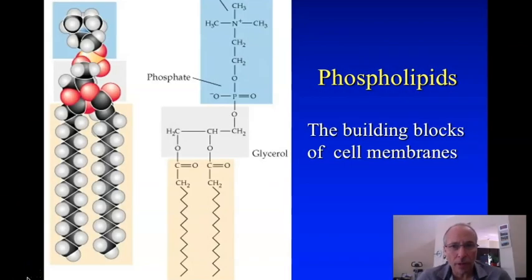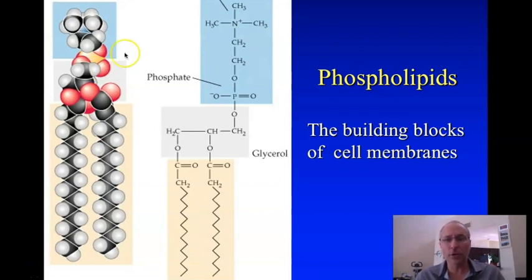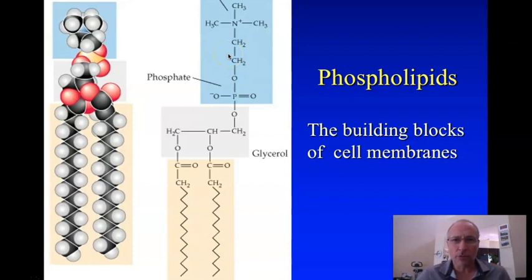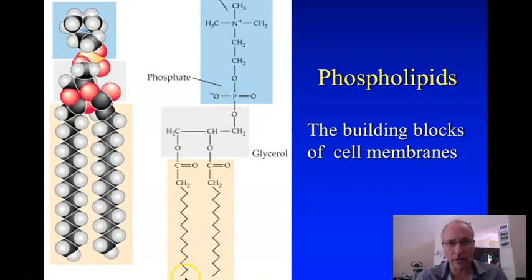What is the cell membrane made out of? It's made out of these kinds of molecules right here. This is a space-filling model of that molecule, and here's the simplified structural formula. You can see it has a choline phosphate portion up here, then a glycerol, and then these things coming down. What you're looking at here is a molecule of soap — that's what this is.